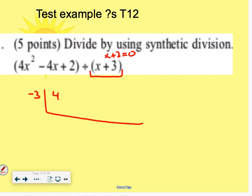So then inside, we're going to put the coefficients, and then we're going to bring down, multiply the 4 by the negative 3, put it there, and add. And then we're going to repeat. We're going to take negative 16 times 3. We're going to get 48, and we're going to add.